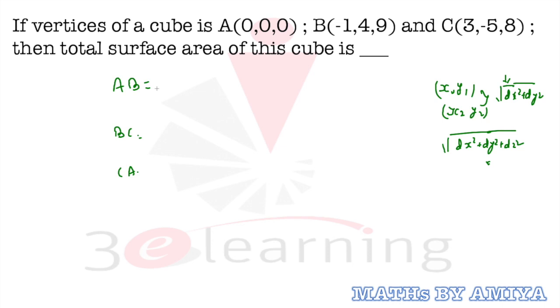So finding the distance between A and B: the difference in x is 1, so √(1² + 4² + 9²) = √(1 + 16 + 81) = √98.